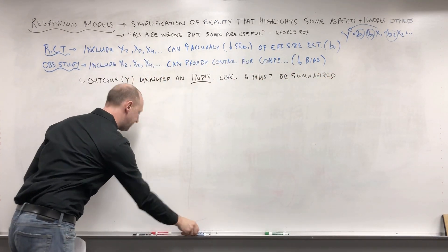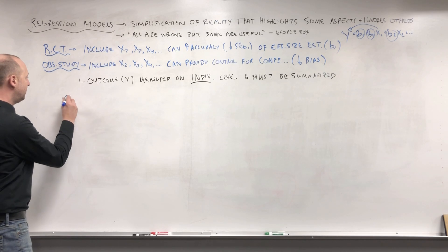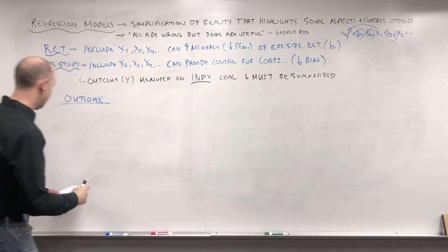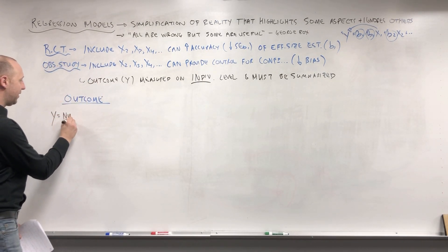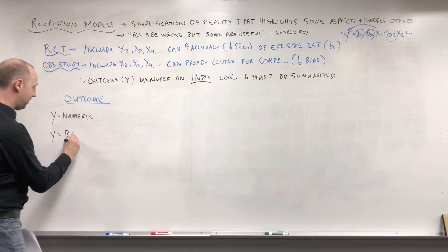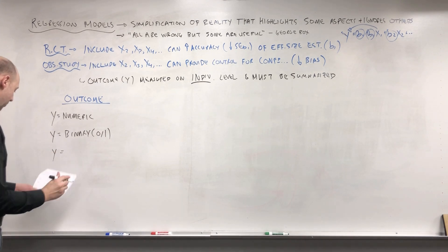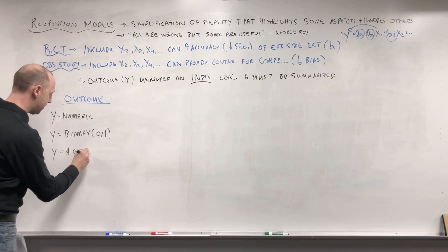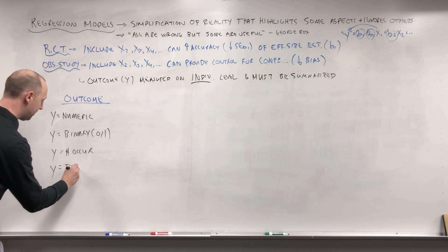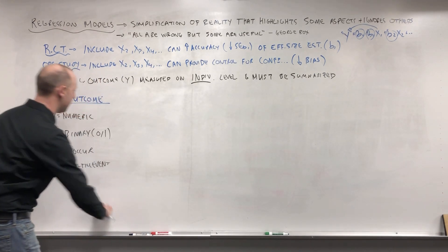I want to talk about the four types of outcomes we're going to mainly look at in this course. The first is where y is numeric — some numeric outcome. Second is where y is binary — a zero or one. Third is where y is a number of occurrences — how often did some event occur. And fourth is where the outcome is a time until an event, such as survival times or waiting times — how long until something happens.